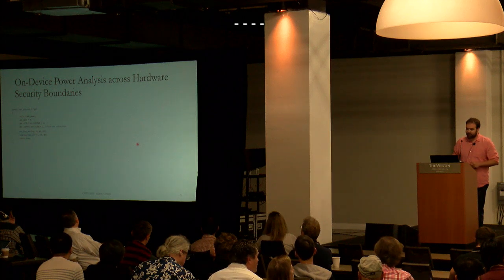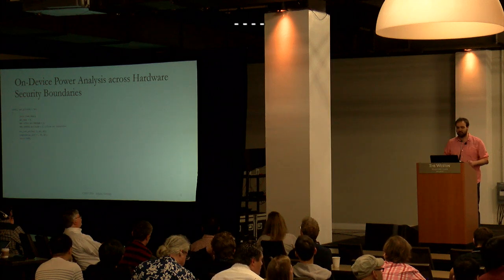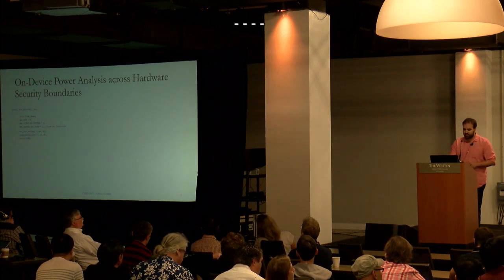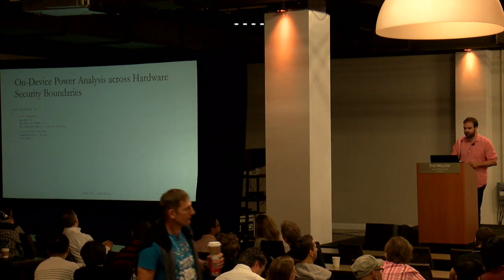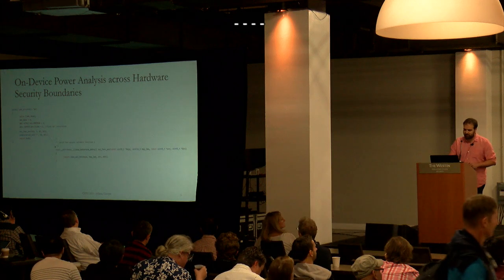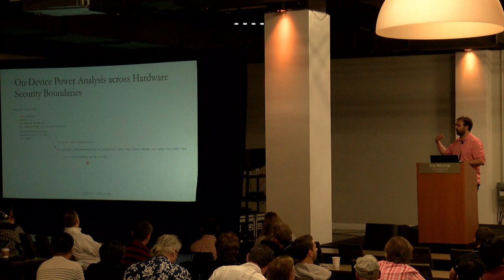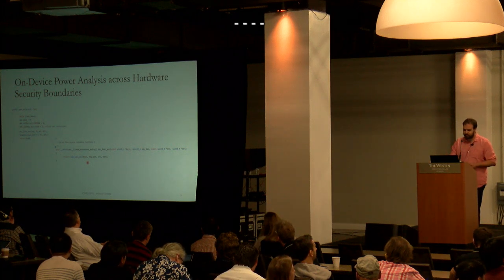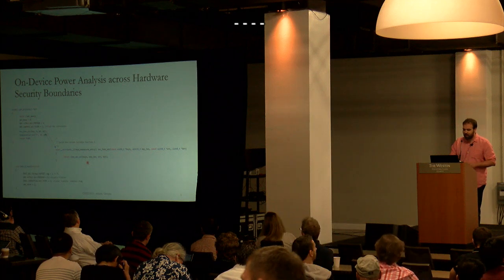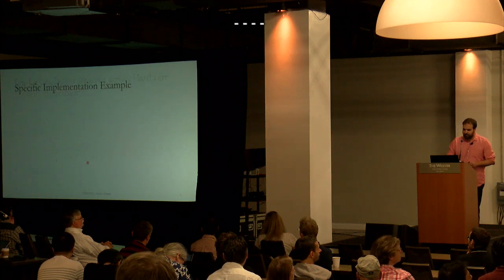In practice, code in the non-secure space calls into the secure space via a non-secure callable function, which in turn calls a secure function — in this case just a simple crypto call. During the crypto call, we're running an ADC, which we can then sample afterwards. That's the very basic idea.